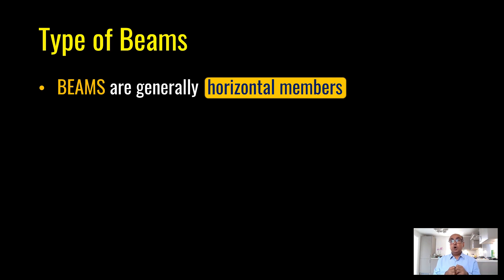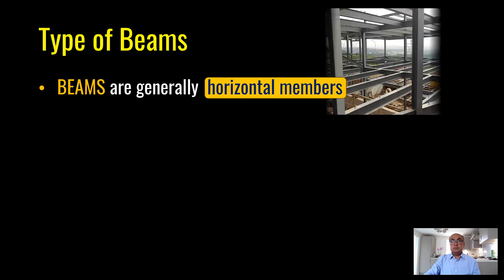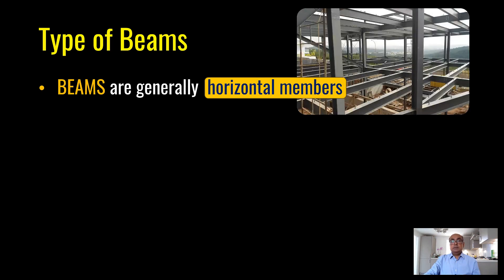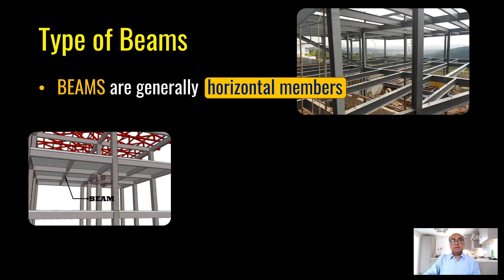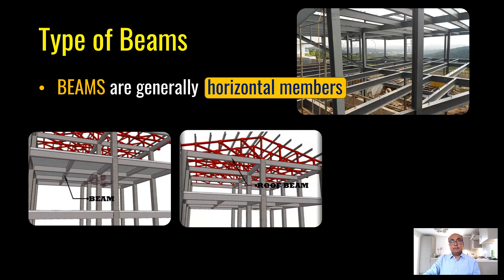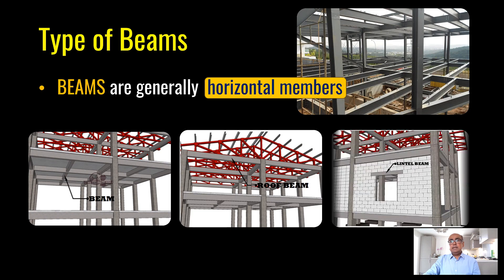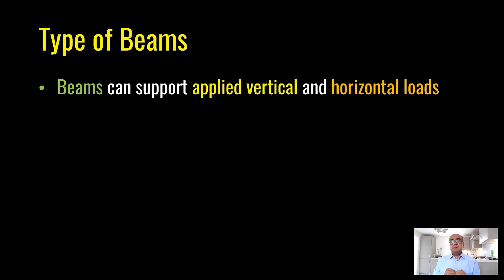What type of beams do we have? Beams are generally horizontal members. A beam can be supporting floor loading, roof loading, or load from a wall — that last type is termed as a lintel beam. Beams can support horizontal and vertical loads, but mainly they support vertical loads.